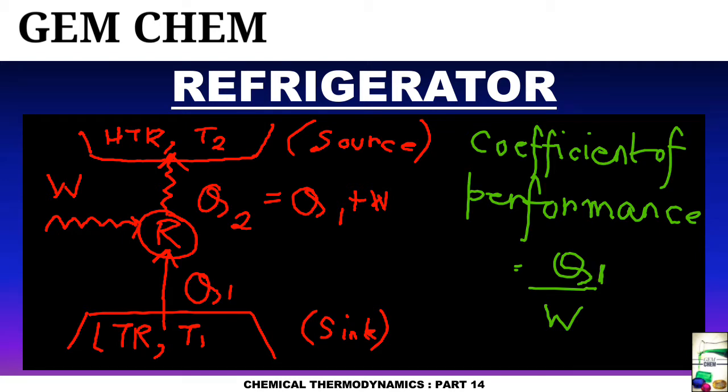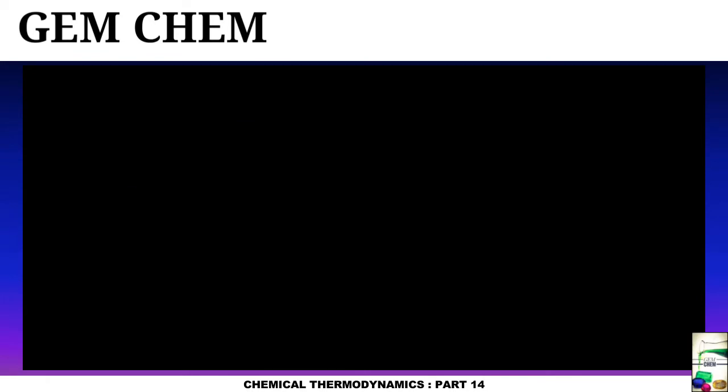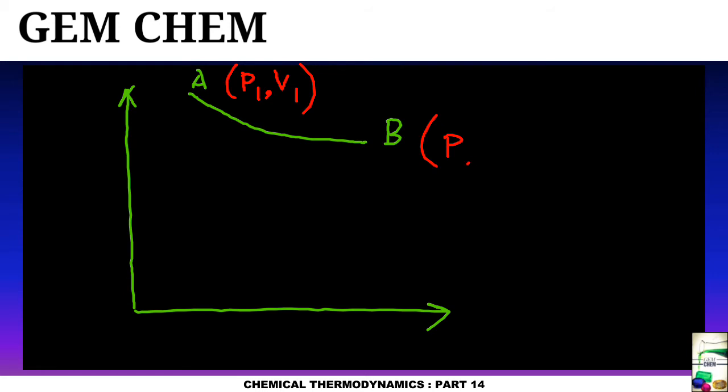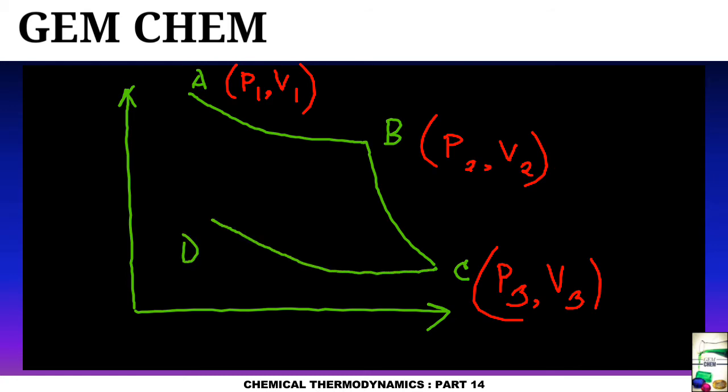Now if you try to draw the Carnot cycle for this case, we are going to draw for refrigerator. So we have a curve like this which is A to B, and this denotes pressure of P1 V1 volume, P2 V2. Similarly for the next step, we have this graph, so this is C with pressure P3 and volume V3. Next we will go for compression, so it is point D, so we are having P4 V4.